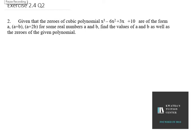We start with question number 2 of exercise 2.4. It is given that the zeros of the cubic polynomial x³ minus 6x² plus 3x plus 10 are of the form a, a plus b, and a plus 2b for some real numbers a and b. We need to find the values of a and b as well as the zeros of the given polynomial. We are given f(x).